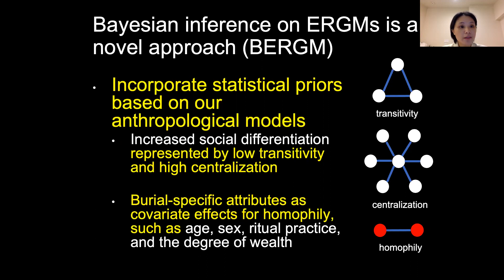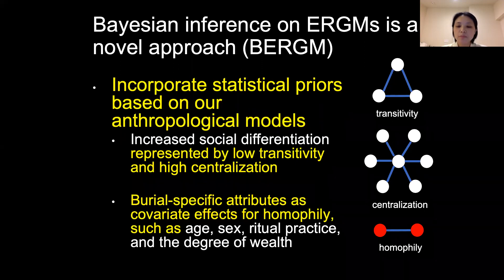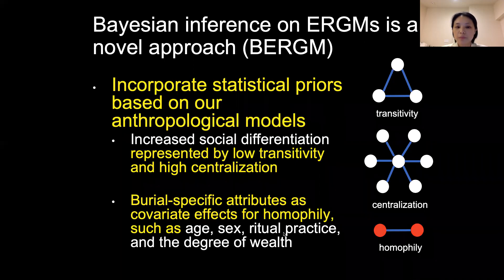In this study we want to test the hypothesis that society shows increased social differentiation after European arrival. To do this, we model the burial network after European presence as characterized by low transitivity and high centralization — meaning less clustering before European contact and the presence of prominent individuals who possess more prestige goods, indicating increased social differentiation after contact. We also include burial-specific attributes as covariate effects for homophily, such as age, sex, ritual practice, and degree of wealth, to explore their importance in network formation. Homophily here means burials with the same age tend to have similar burial goods.